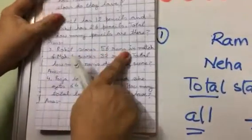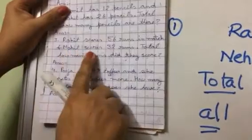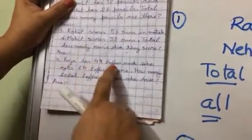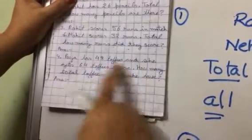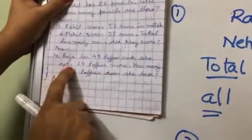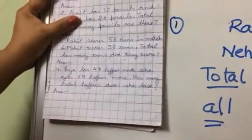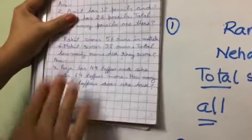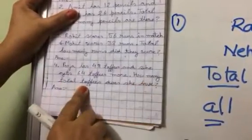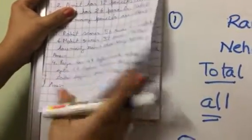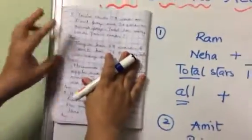Rohit scores fifty-six runs in match. Mohit scores thirty-two runs. Total how many runs did they score? Pooja has forty-eight toffees. She gets sixty-four toffees more. Gets - yaha pae hamara kya word hai? Gets. Toh matlab usko on bill gai. Usko pehle hi forty-eight toffees thi. Usko kisini nae aur laa kar sixty-four toffees day di. How many total toffees does she have? Toh total kitni toffees ho gaihi uske paas mein? Very good.